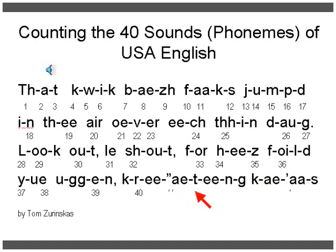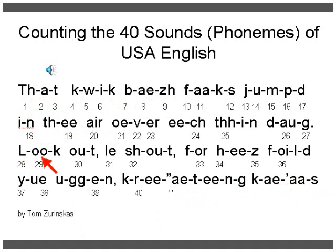All these dashes would be missing in regular True Spell, so without the dash it would look the same. Many words look the same in True Spell as in traditional spelling: 'that,' 'N,' 'D,' 'air,' 'look,' 'out,' 'shout,' 'for.' True Spell is meant to be close to English and is very English-friendly, computer-friendly — anybody can type it on their computer.